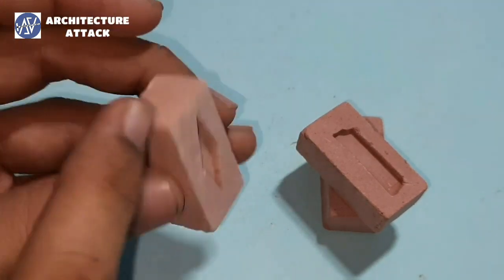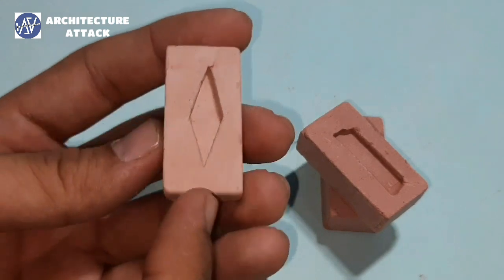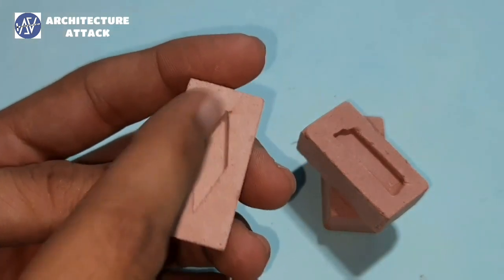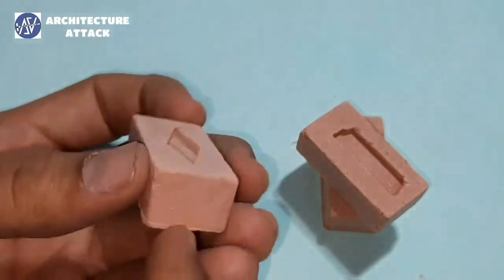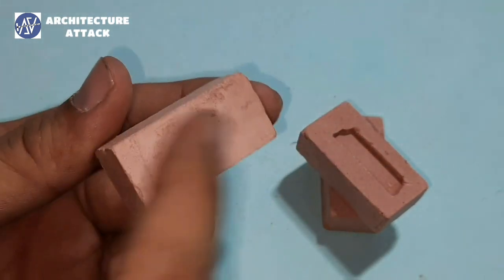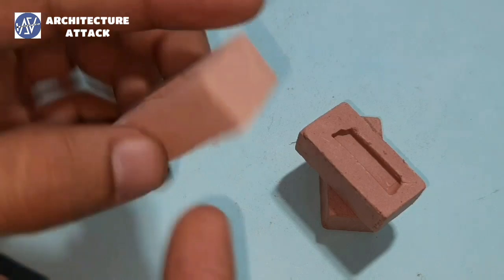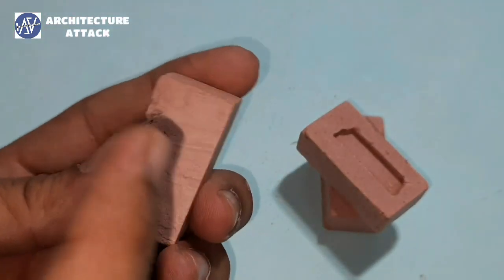And this face - these are called header face. The above face which has a logo or some mark inside is called frog, and the face which is plain and down the brick is called bed.